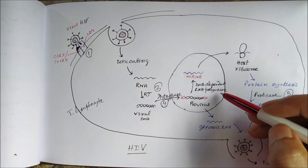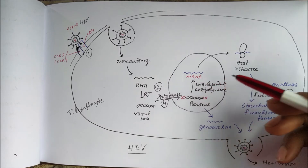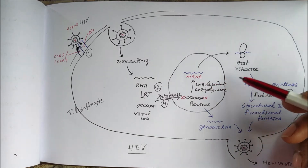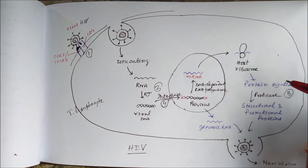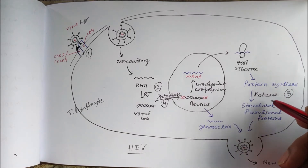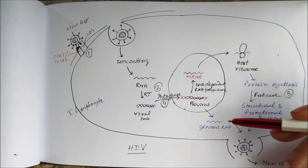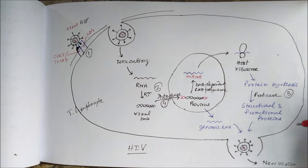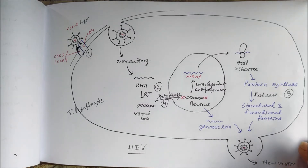From the provirus, messenger RNA is synthesized by the action of host cell DNA-dependent RNA polymerase. This messenger RNA binds to the host ribosome for protein synthesis. HIV's own protease then converts these proteins into structural and functional proteins. Some genomic RNA is also synthesized from the provirus, and all components assemble to form new virions that are released.